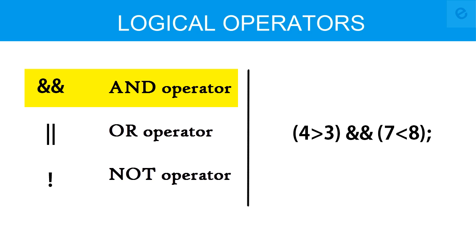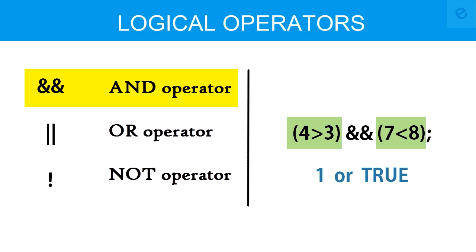When working with logical operators we are actually connecting the relations. In the AND operator we see that two relations are given: the first one is four is greater than three, and the second one is seven is less than eight. For the AND operator to return the value one or true, both of the relations are required to be true. Since both are true, the value we get is one.